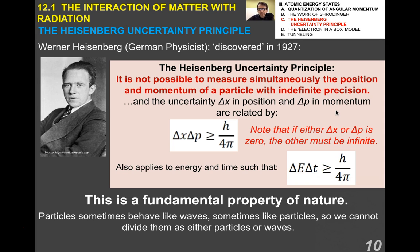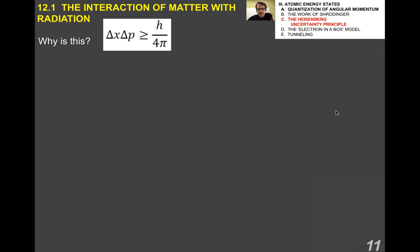Don't worry about why this is because it's a fundamental property of nature and nobody has ever figured out why this is. It just is. This is related to the fact that particles sometimes behave like waves, sometimes like particles. We can't classify them exclusively as either particles or waves. Making momentum as accurate as possible makes position inaccurate and vice versa.